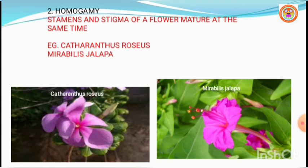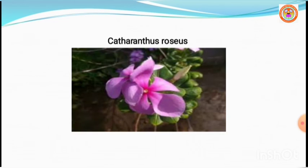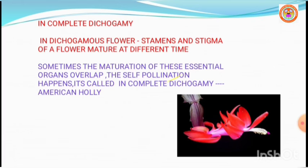The next adaptation is incomplete dichogamy. In dichogamous flowers, stamens and stigma mature at different times. However, sometimes the time of maturation of these essential organs overlaps, so it becomes favorable for self-pollination. In general dichogamy, the maturation of stigma and stamen at different times may overlap one another, so they mature more or less at the same time, making self-pollination still possible.